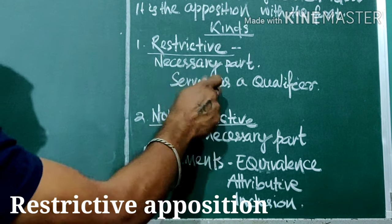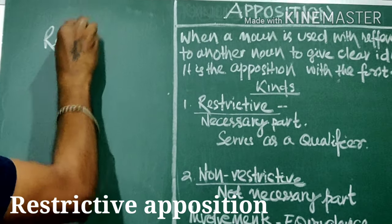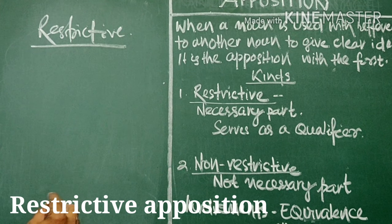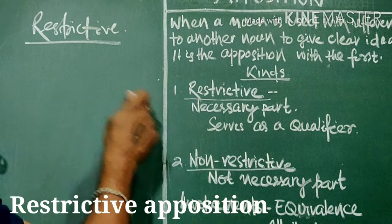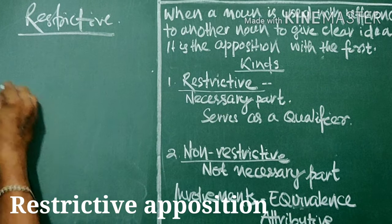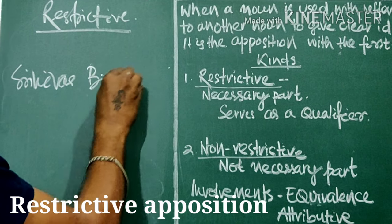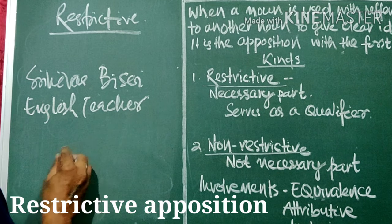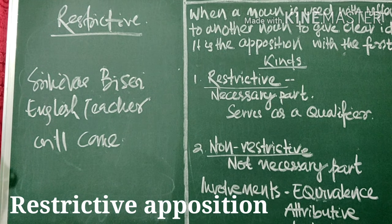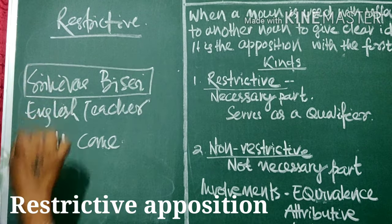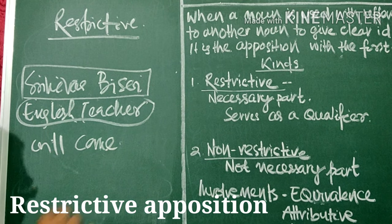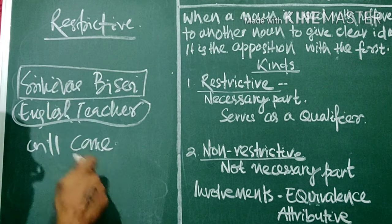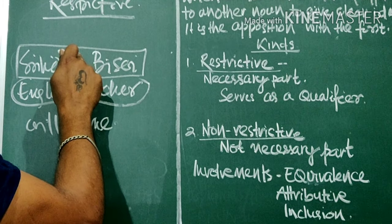Restrictive Apposition acts or serves as a qualifier. It is the necessary part of the first noun, and the second Apposition serves as a qualifier. For example: 'Srinivas Visoye, English teacher, will come.' Who will come? Srinivas Visoye. Who is Srinivas Visoye? English teacher. This Apposition is necessary and acts as a qualifier of the first noun. This is called restrictive Apposition.